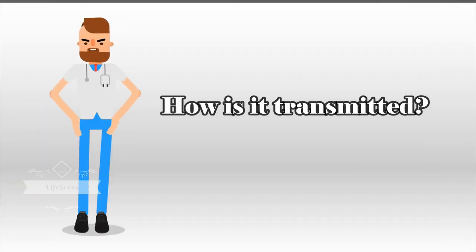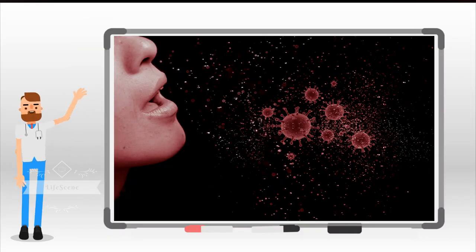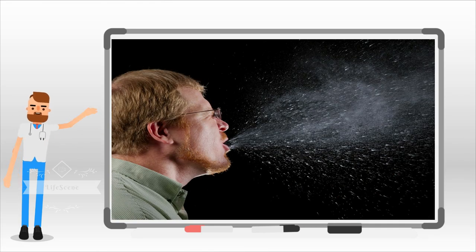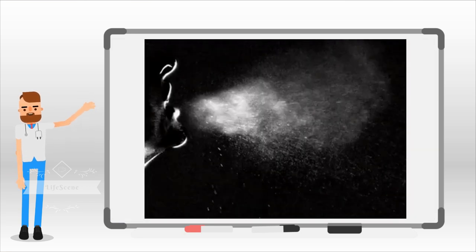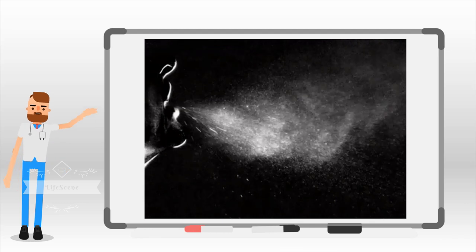How is it transmitted? The new coronavirus is a respiratory virus which spreads primarily through droplets generated when an infected person coughs or sneezes, or through droplets of saliva or discharge from the nose or through something that has been contaminated with the virus.